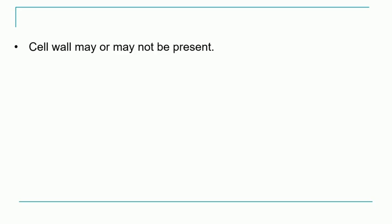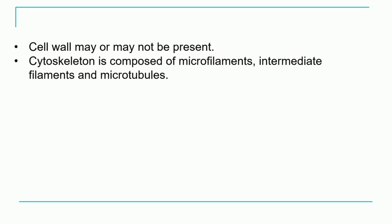Some more characteristics of the eukaryotic cell: the cell wall may or may not be present. For example, in plants the cell wall is present, but in the animal cell the cell wall is absent. Just as our body requires a skeleton, the cell also requires a type of skeleton, which is known as cytoskeleton. The cytoskeleton is composed of different filaments like microfilaments, intermediate filaments, and microtubules.